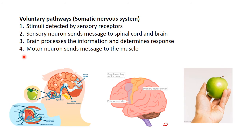Let's have a look at our voluntary pathways first. When we're talking voluntary, we're talking about our somatic nervous system. Somatic is the part that we can control — so for example, if we stand up, sit down, or have a drink, all those things are voluntary and controlled by our somatic nervous system.